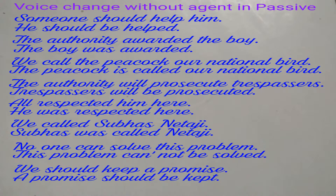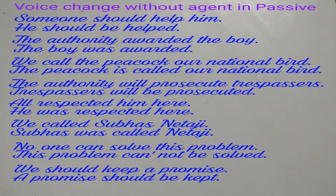Example 7: 'No one can solve this problem.' This is in active. Passive will be: 'This problem cannot be solved.' The doer is not required here.